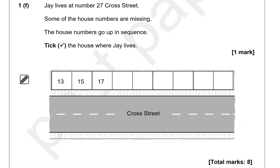Jay lives at number 27 Crossing. Some of the house numbers are missing. The house numbers go up in sequence — tick the house where Jay lives. The sequence goes 13, 15, 17, 19, 21, 23, 25, 26, 27, 28, 29. We're looking for number 27, and that is where Jay lives.